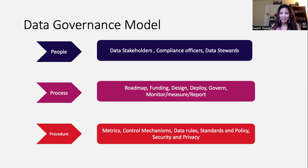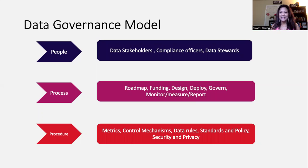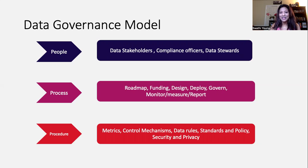Control mechanisms include access control and additional controls like who can archive or delete the data. Data rules, standards, and policies are also part of the model. Last but not least, security and privacy are super important. Hopefully this gives you an overview of what a data governance model looks like — good luck with your data journey.